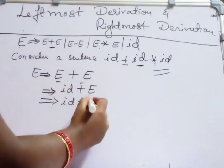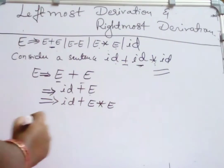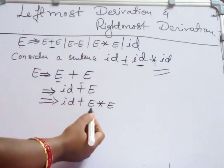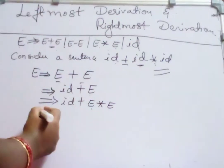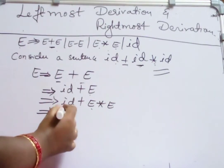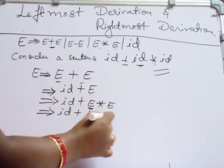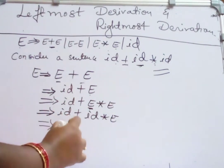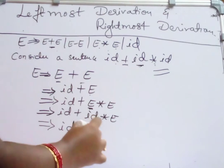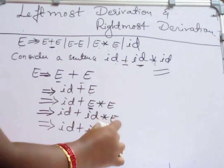This E should be replaced with the production E derives E star E. Now which is the leftmost E? This is the leftmost E. In leftmost derivation, each time the leftmost variable should be replaced. So we get ID plus ID star E. Next, replace this final E with ID.